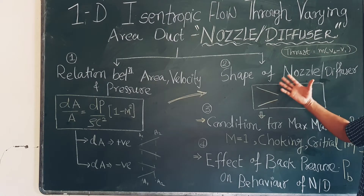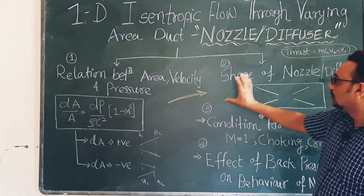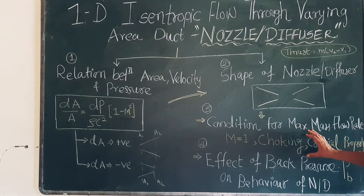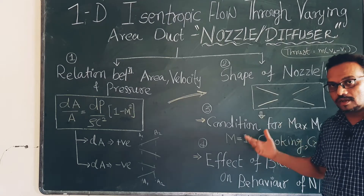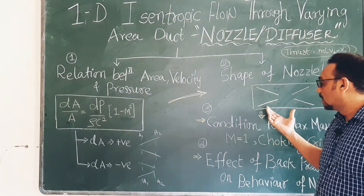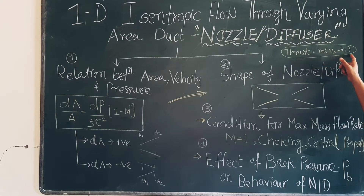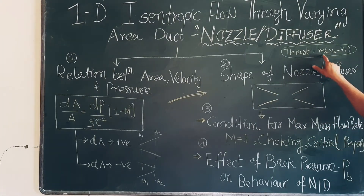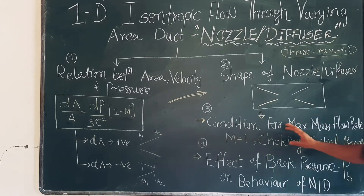This equation is very helpful in deciding and designing the shape of a nozzle or diffuser. The third theory is the condition for maximum mass flow rate. The nozzle and diffuser are used to produce thrust — for example, to send a rocket into space or to fly an aircraft. Thrust is given by F = ṁ(u₂ - u₁), so both the exit velocity and the mass flow rate are important. The mass flow rate must be maximum in order to get maximum thrust.